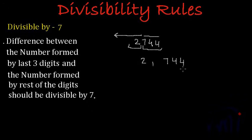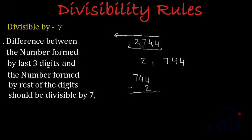The next step is to find the difference. The difference between the number formed by the last 3 digits and the number formed by the rest of the digits should be divisible by 7. We subtract the smaller number from the bigger number. The larger number here is 744, and if we subtract 2 from it, 4 minus 2 is 2, giving us 742.